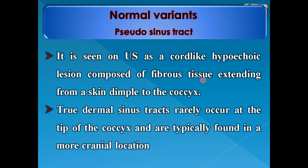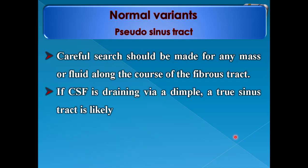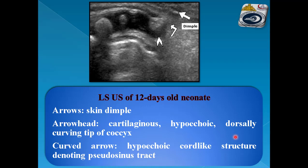Pseudosinus tract is seen on ultrasound as a cord-like hypoechoic lesion composed of fibrous tissue extending from the skin dimple to the coccyx. True dermal sinus tracts rarely occur at the tip of the coccyx and are typically found in a more cranial location. If CSF is draining via a dimple, a true sinus tract is likely whatever the location. This example shows the tip of the coccyx with the cord-like pseudosinus tract and the skin dimple.